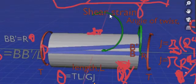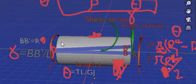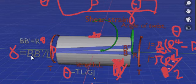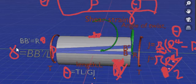From trigonometric relationship, tan gamma equals Bb divided by L, but for small angles, tan gamma is almost the same as gamma.